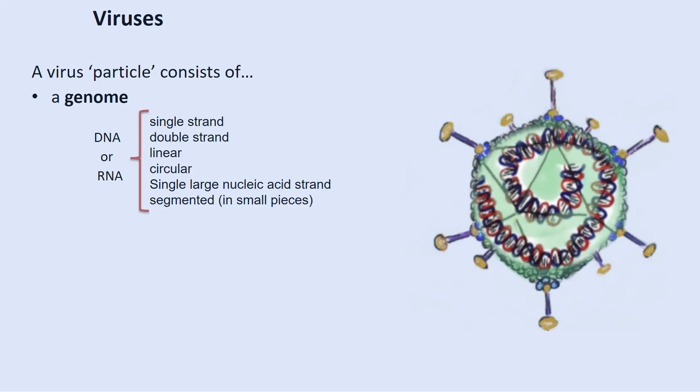The electron micrograph images of the 5,000 or so known viruses identified viruses with different shapes, and the following terms are important when you learn or talk about viruses. All viruses are made up of two basic components: their genome and a capsid. The genome is either a DNA or RNA molecule, but never both. The genome can be single or double-stranded, linear or circular in nature, and it could be a single large nucleic acid strand or multiple smaller strands called segments.